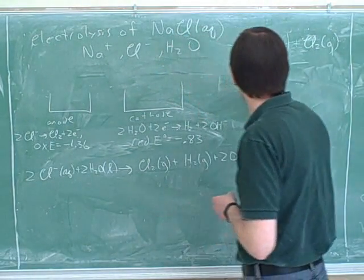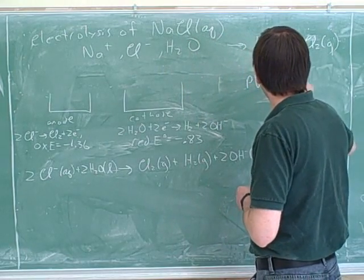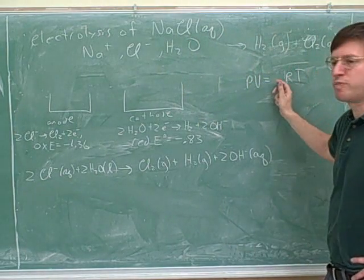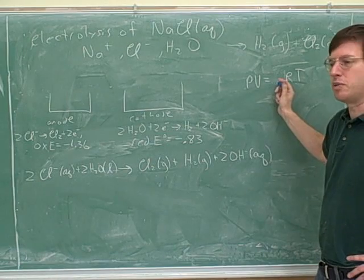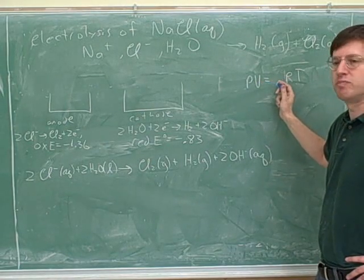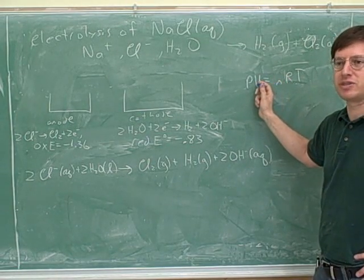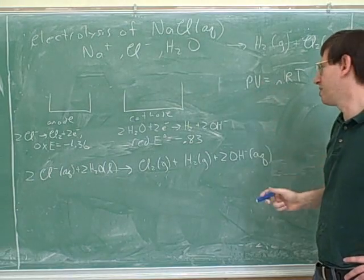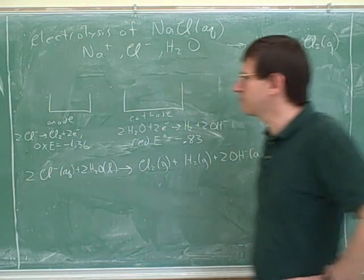And in an ideal gas, the volume is proportional to the number of moles. So we don't actually have to translate from volume into moles. We can just keep working with volumes. Because if we have twice the number of moles, we'd also have twice the volume.